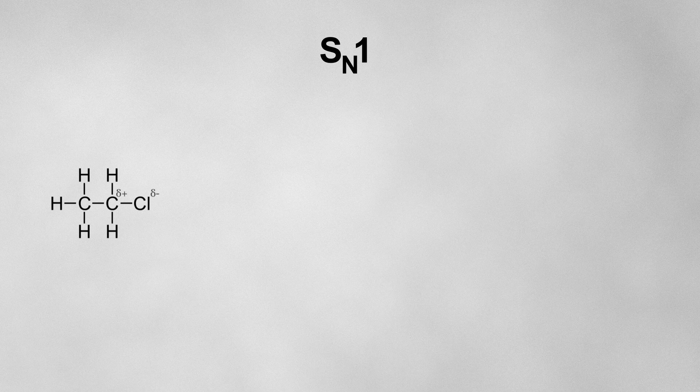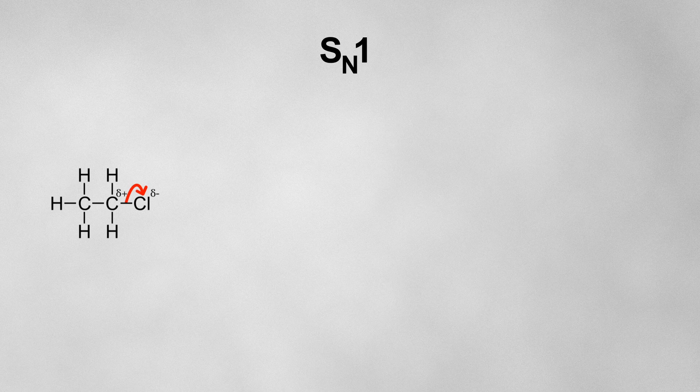In an SN1 reaction, the rate determining step only involves one reactant, the halogeno alkane. The carbon-halogen bond is polar because the halogen is more electronegative than the carbon atom. What initiates the SN1 reaction is these electrons spontaneously shifting all the way onto the halogen, causing the bond to break and leaving a carbocation and a halide ion.